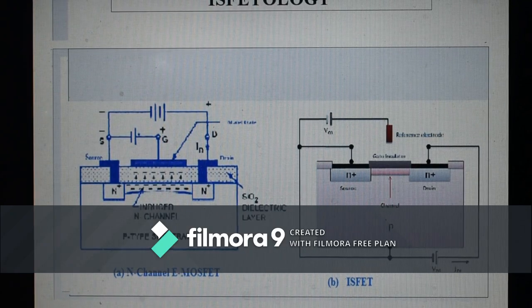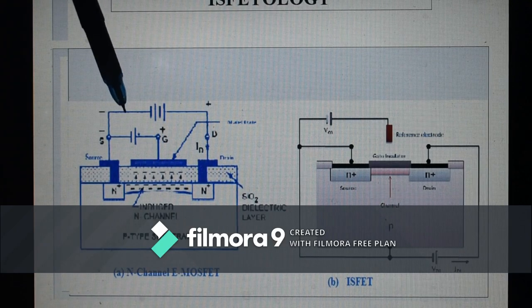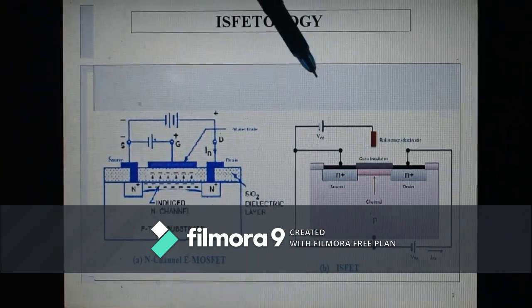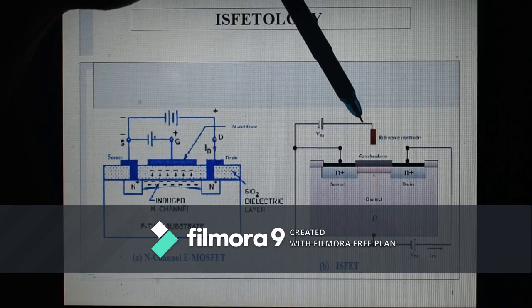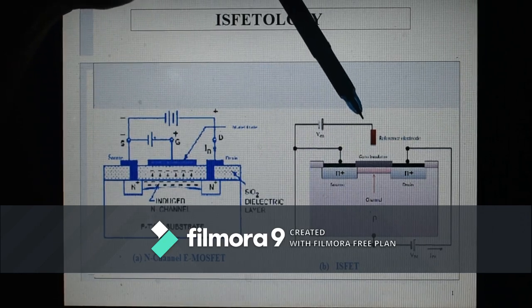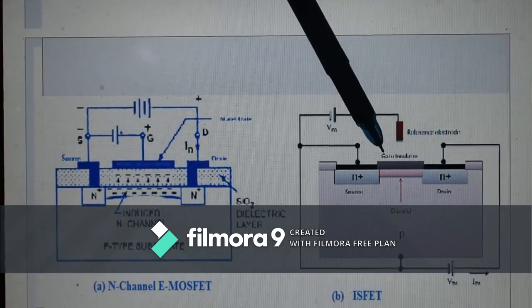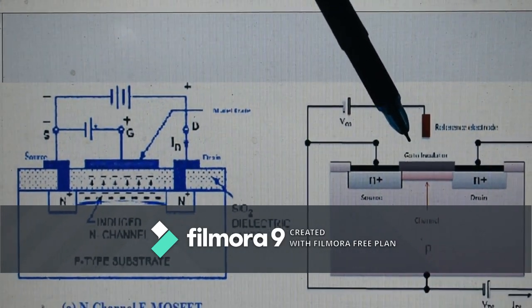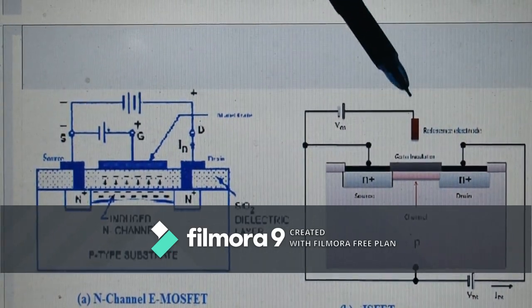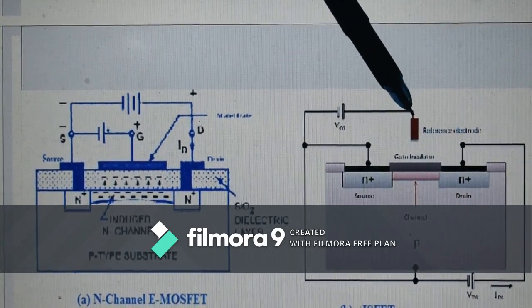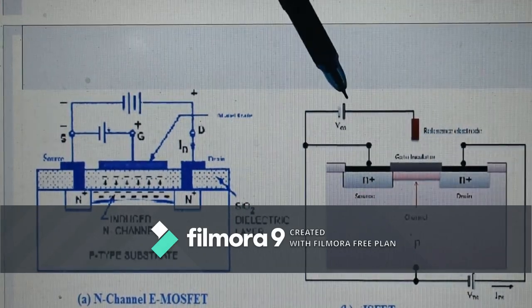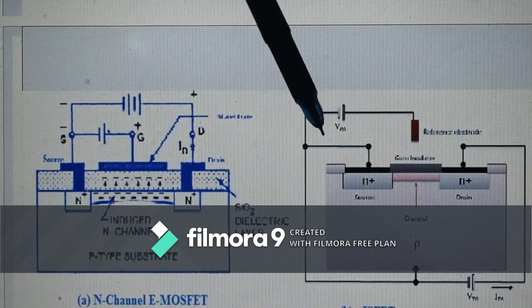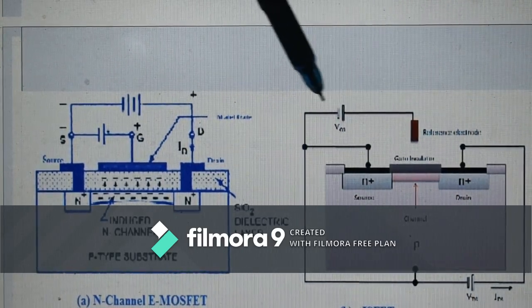ISFET is generally obtained by replacing the metal electrode of MOSFET by a reference electrode, a chemically sensitive insulating layer in between whose presence and electrolyte solution under examination. This reference electrode is connected to the voltage source and this electrolyte closes the circuit.